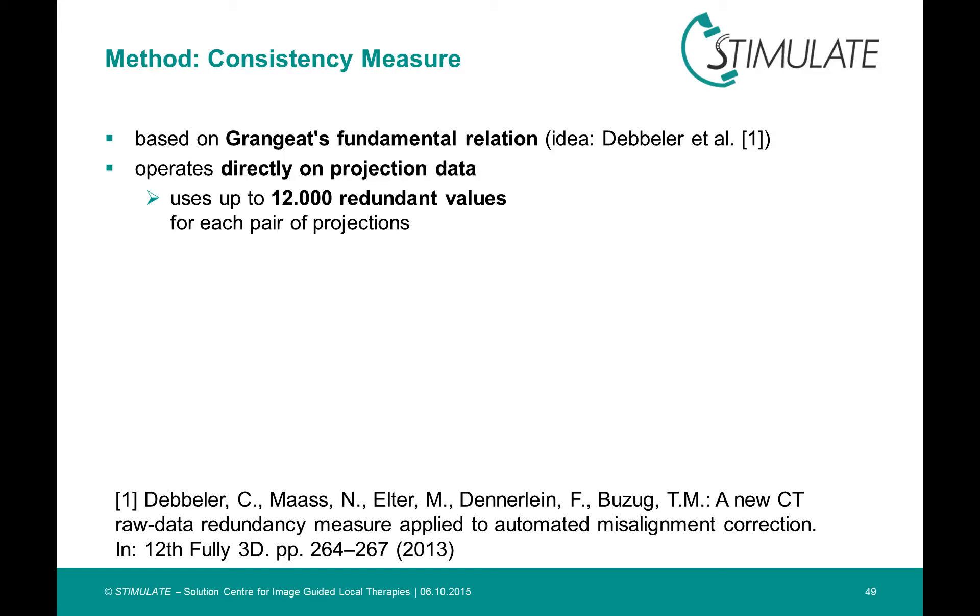It was in connection with the calibration of industrial CT scanners. It works directly on the projection images and has no need for a reconstruction. The advantage of this measure in contrast to other methods which use redundancy is the large number of redundant values you can obtain. We are able to collect up to 12,000 redundant values for each pair of projections.